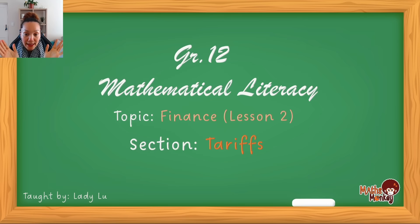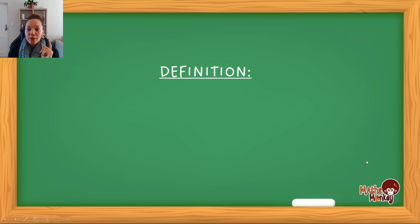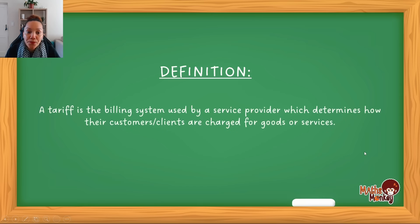As I mentioned we are looking at tariffs and in this video I'm going to focus on water tariffs because this is a section on tariffs that usually is awarded the most marks if they ask this question and also it's the most complex. So if you get it, if you understand how water tariffs work, then I'm pretty sure that all the other types of tariffs would be easy for you to understand. So before we start let's just make sure we understand what a tariff actually is. A tariff is a billing system used by a service provider which determines how customers and clients are charged for goods or services.